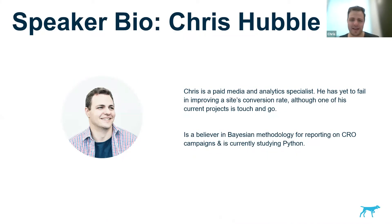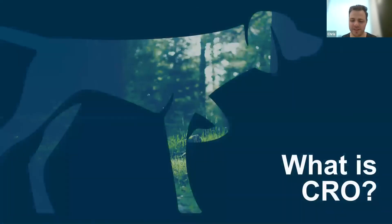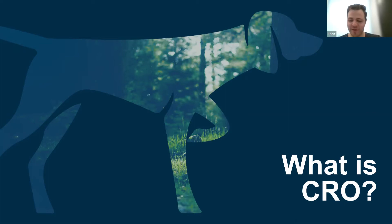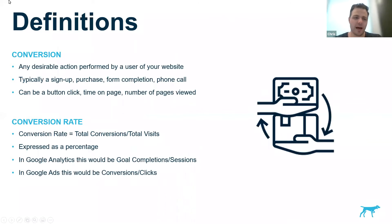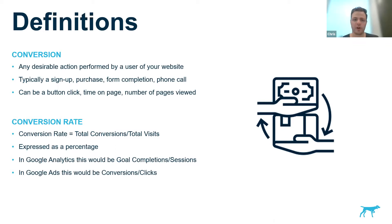Thanks Gary. So I thought we'd start off today talking about what is CRO or Conversion Rate Optimization. There's a bit of mysticism around it, so I think we'll just get some definitions out of the way. First off, what is a conversion? Really any action that's of interest on your website. If you think about e-commerce, it might be purchase of a product. If you think about a newsletter promotion, signing up for that newsletter. There could also be simpler things like clicking a button or spending a certain amount of time on a page.